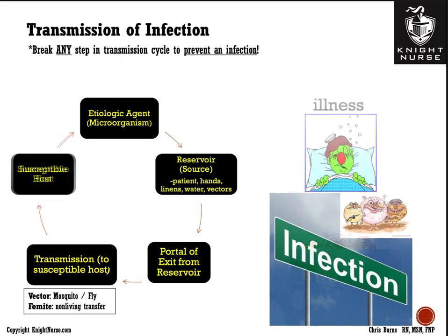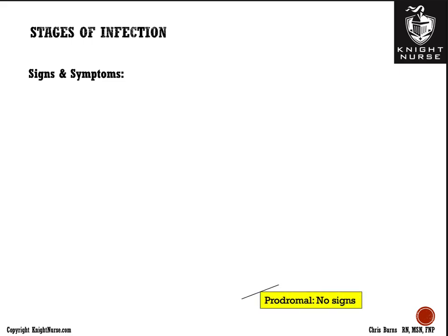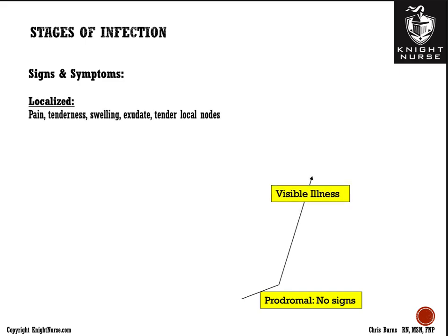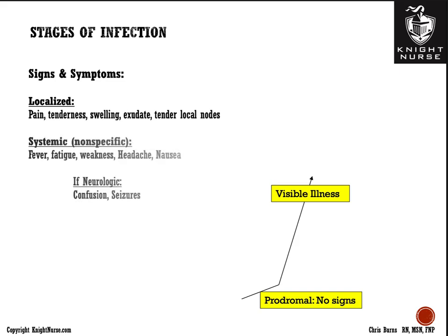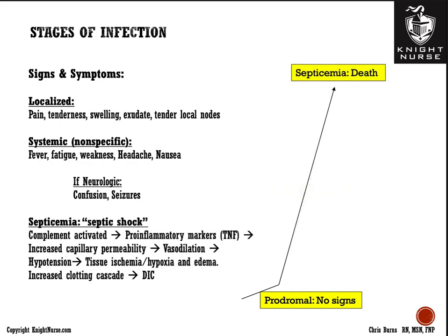The stages of infection begin with the prodromal stage, where there are few symptoms and organisms are just beginning to establish a foothold. This is followed by a rapid linear increase with visible illness: localized symptoms like pain, swelling, exudate, and tender lymph nodes, as well as non-specific systemic manifestations like fever, fatigue, weakness, headache, and nausea. If the infection is in the brain, confusion and seizures can occur.